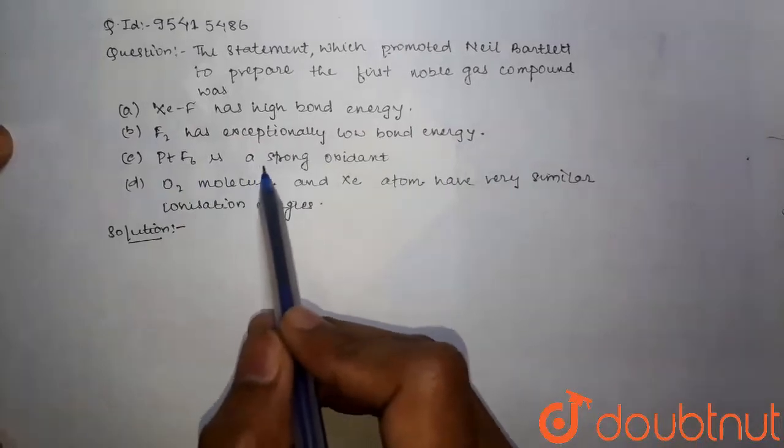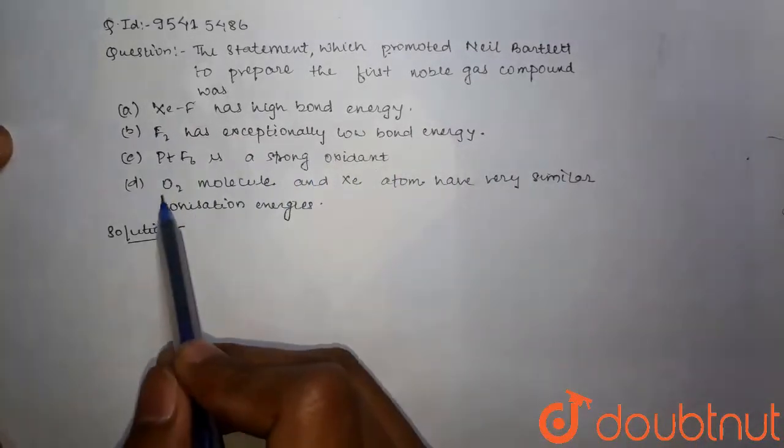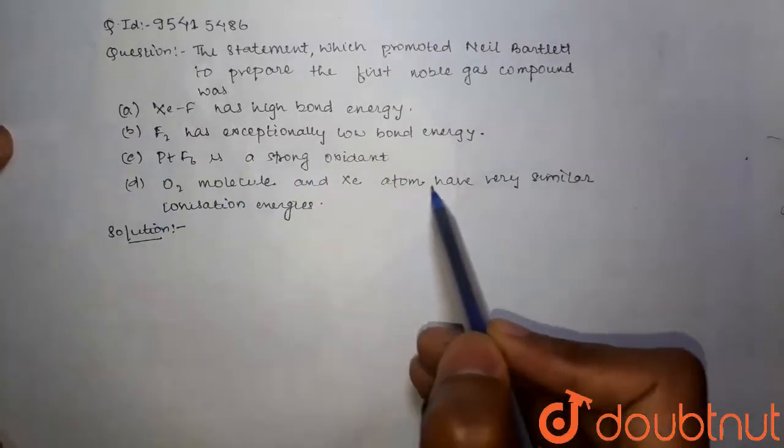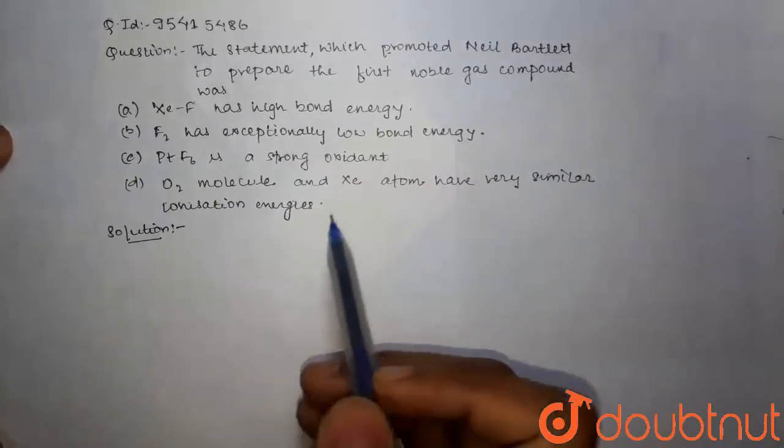Option C is PTF6 is a strong oxidant. Option D is O2 molecule and xenon atom have very similar ionization energies.